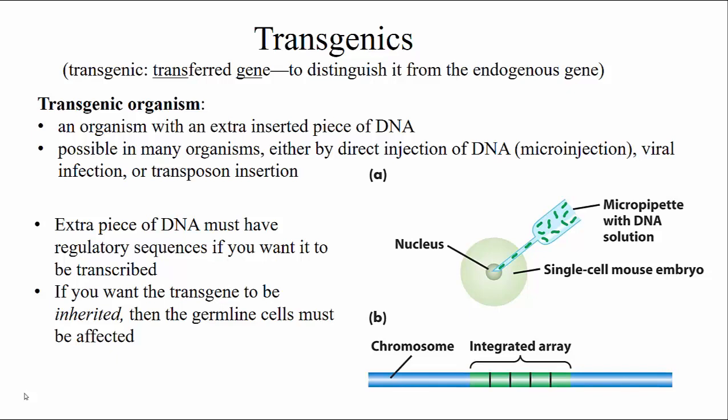A transgenic organism is an organism that has an exogenous gene that has been added to its genome. What that means is that it is not its own gene — it is an extra gene that has been inserted into the genome. Transgenic organisms can be made in many different types of organisms, and there are a variety of different ways that these are created.